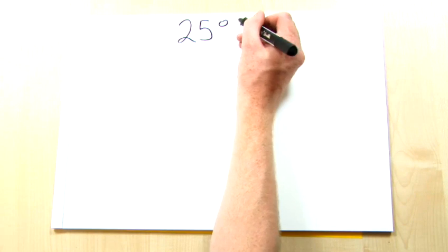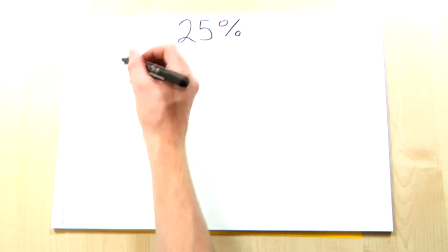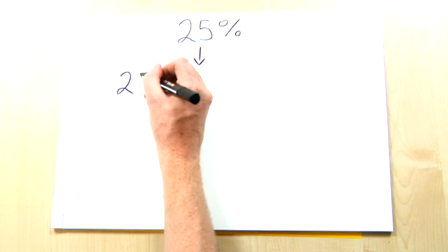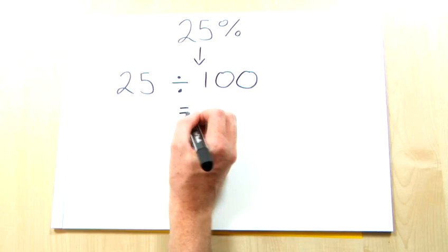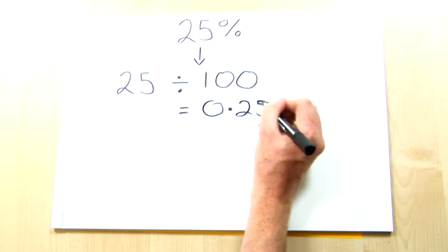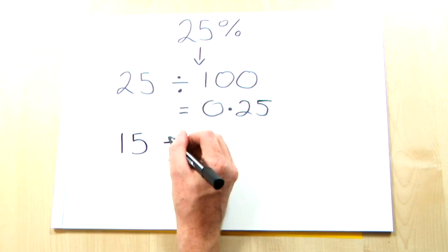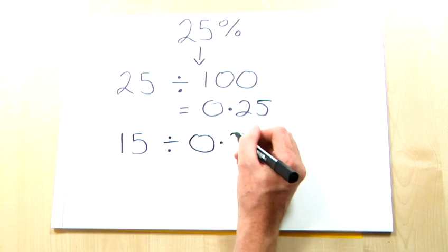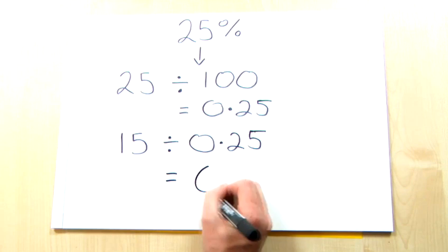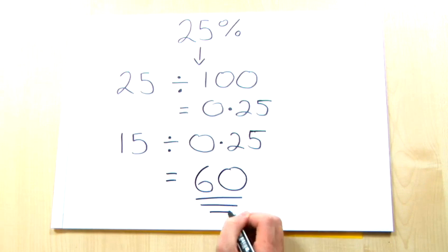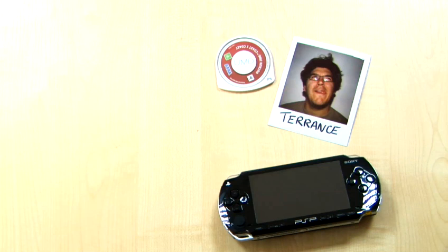First things first, you need to convert the percentage that you've been given, in this case that's 25%, into a decimal. So divide 25 by 100, to give a value of 0.25. Now take the partial figure of 15, which is the level Terence is currently on, and divide it by 0.25, to get the total number of levels in the game, which is 60. Quite a long way to go then Terence.